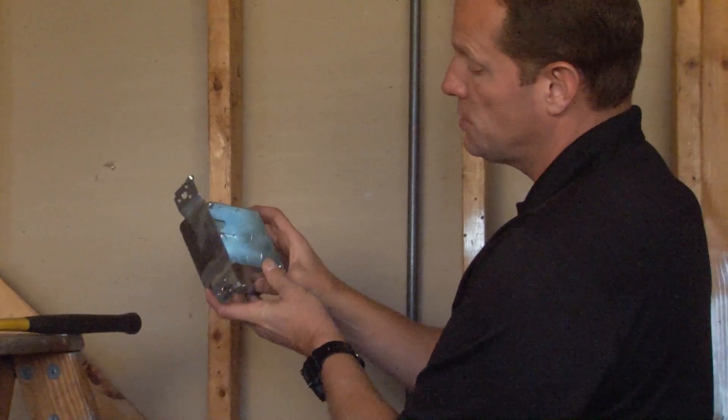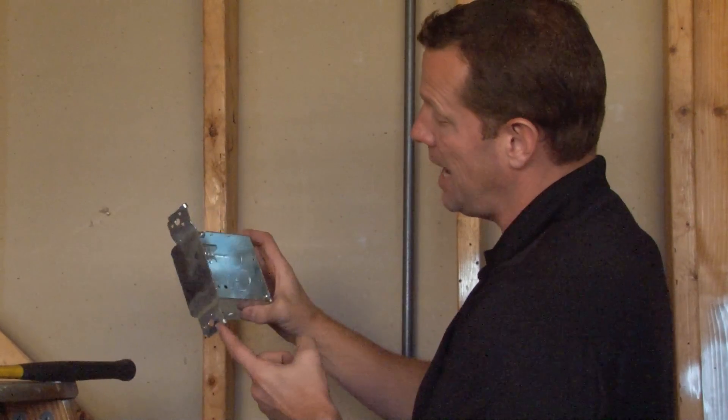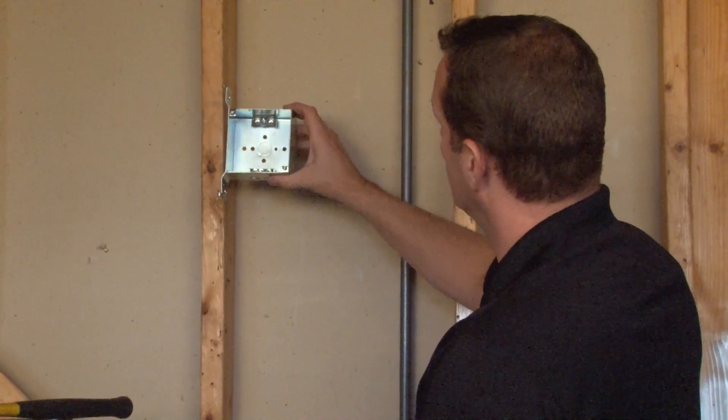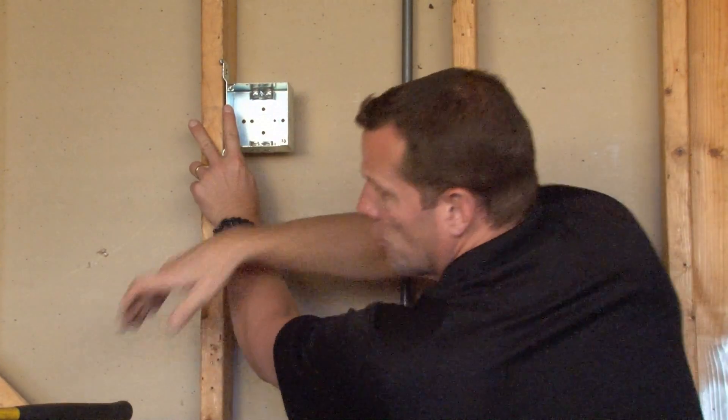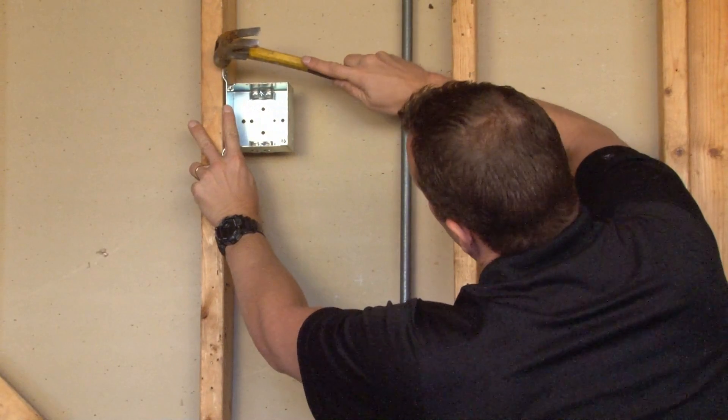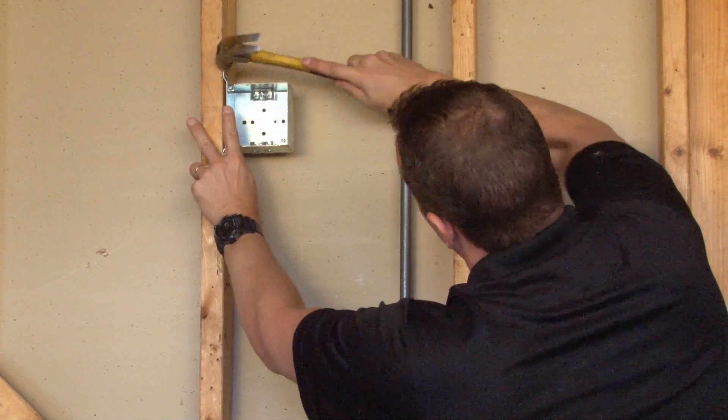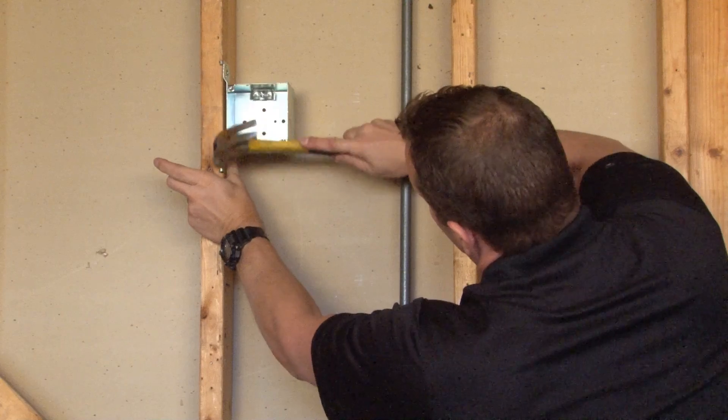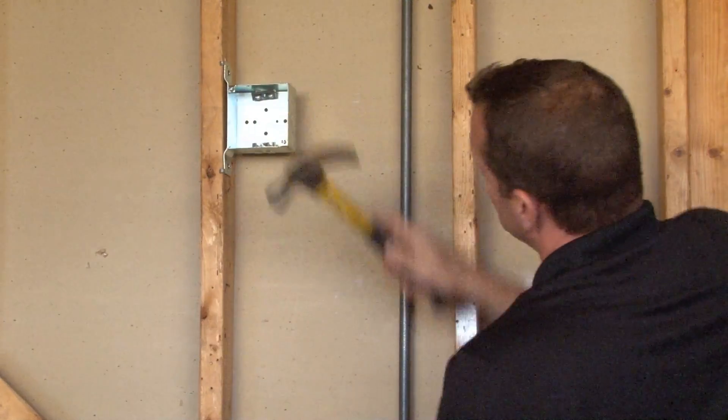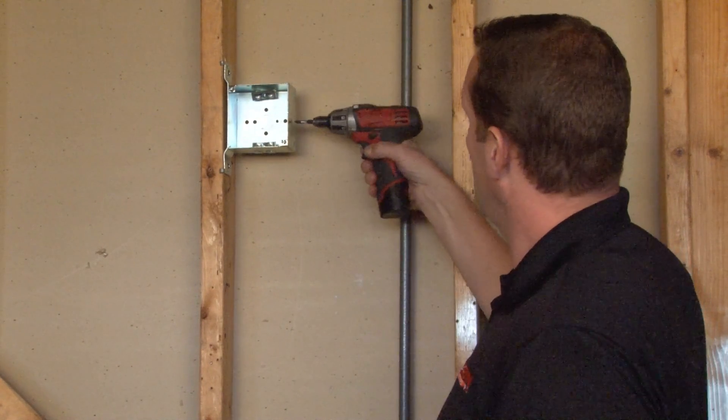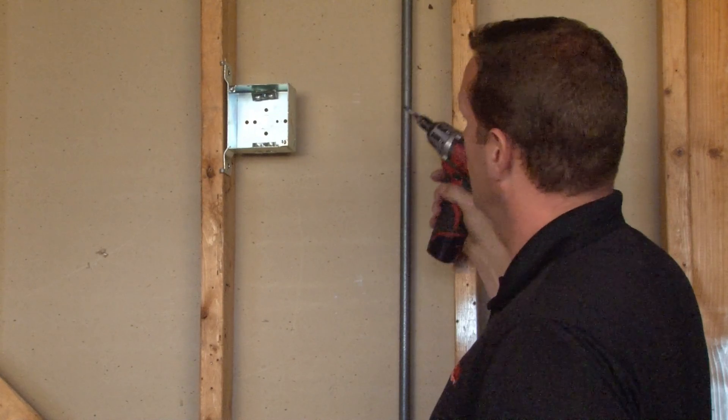This particular box is made with a wood tang for wood studs. You simply hold the box in place, grab your hammer, and strike the wood tang, which temporarily holds the box in place while you're removing knockouts and installing conduit.